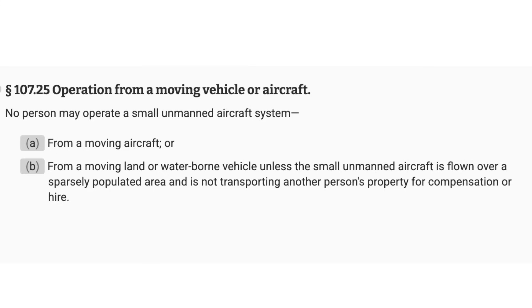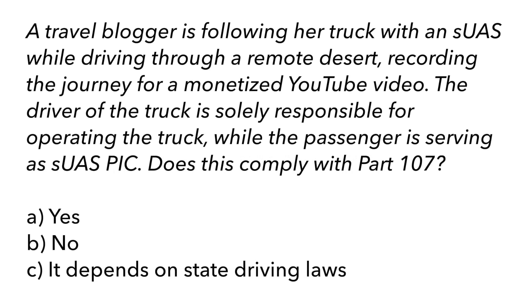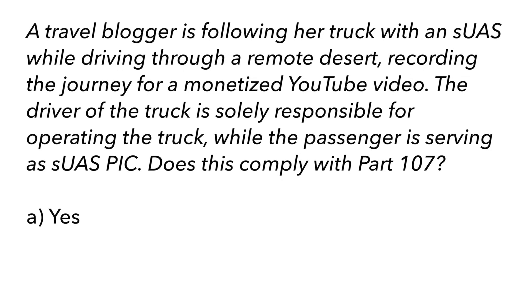Don't over-read this question. You might ask yourself: what airspace are they in, do they need authorization, can the PIC even see the drone? Stop asking those kinds of questions — it gets a lot of people in trouble. Just go to the basic wording and apply it to the regulation. Part 107.25 says a person can operate an SUAS from a moving vehicle if it's over a sparsely populated area and not carrying property for hire. Since the question states they're over a remote desert, the correct answer is yes, it does comply with Part 107.